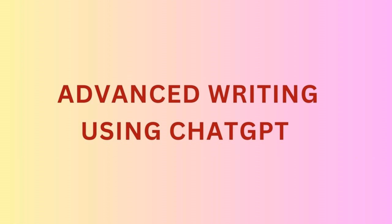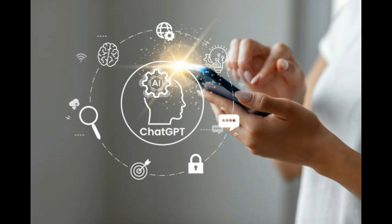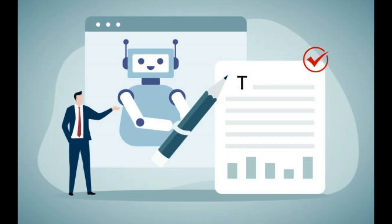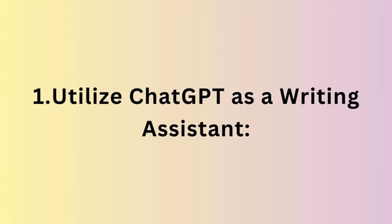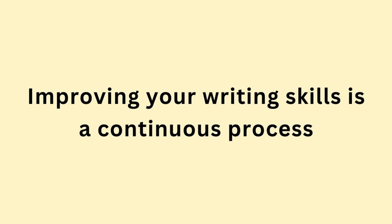Advanced writing using ChatGPT — how to improve writing skills. Improving your writing skills is a continuous process that involves practice, feedback, and commitment to growth. Here are some tips using ChatGPT to enhance your writing: first, utilize ChatGPT as a writing assistant to brainstorm ideas, outline your thoughts, or even draft paragraphs.